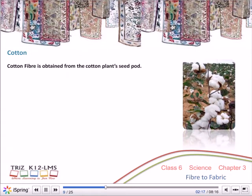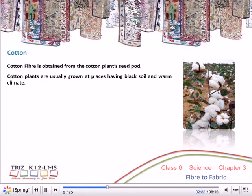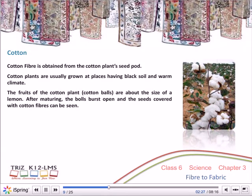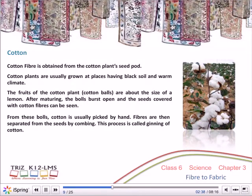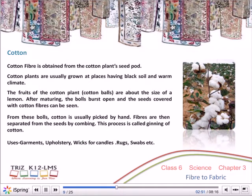Cotton fibre is obtained from the cotton plant seed pod. Cotton plants are usually grown in places having black soil and warm climate. The fruits of the cotton plant, or cotton balls, are about the size of a lemon. After maturing, the balls burst open and seeds covered with cotton fibres can be seen. Cotton is usually picked by hand, and fibres are separated from seeds by combing — a process called ginning. Uses: garments, upholstery, wicks for candles, rugs, swabs, etc.